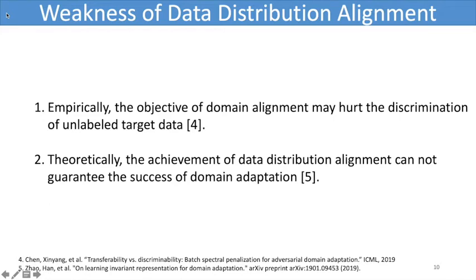Although the framework of distribution alignment has been widely adopted in domain adaptation, its weakness has been revealed recently. On one hand, empirically, the objective of domain alignment may hurt the discrimination of unlabeled target data. On the other hand, theoretically, the achievement of domain distribution alignment cannot guarantee the success of domain adaptation.